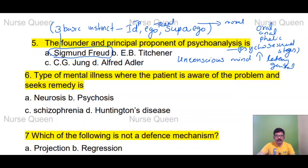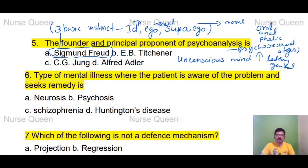Type of mental illness where the patient is aware of the problem and seeks remedy. Options: neurosis, psychosis, schizophrenia, Huntington's disease. The correct answer is neurosis.